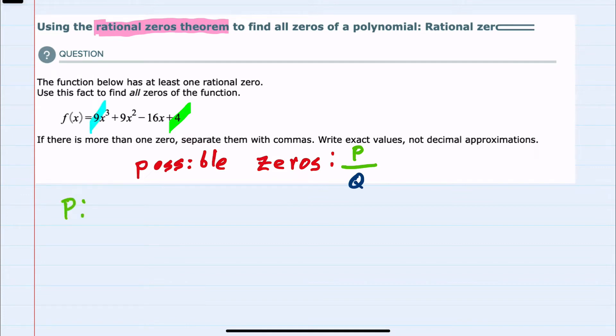So for p, our possible factors of 4 are plus and minus 1, plus and minus 2, and plus or minus 4. For q, the possible factors of 9 are plus and minus 1, plus and minus 3, and plus or minus 9.